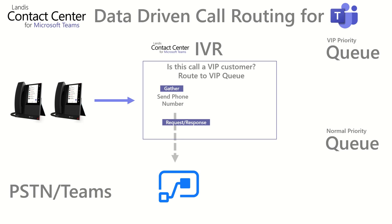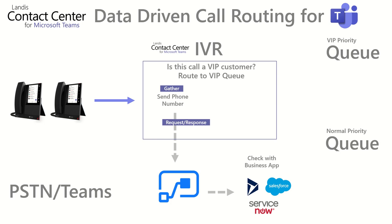In our example, we're sending a request to Power Automate. Power Automate will then check with the business app of your choice. We show some very popular ones, but Microsoft Power Automate can connect to many line of business and CRM applications.